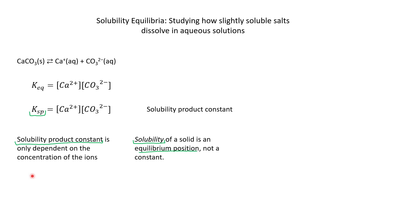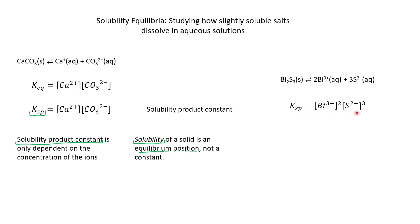Let's look at the KSP expression for a different salt — bismuth sulfide. It is a slightly soluble salt, so some of this solid will dissolve and form the bismuth cation and the sulfur anion, and some of these ions will recombine and form our solid again. Our solubility product does not depend on the solid, so our expression for KSP is simply the ion concentrations raised to the power based on the balanced chemical equation.